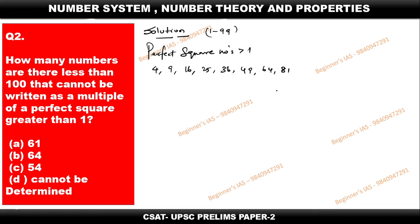The next step is to identify the multiples of these perfect square numbers. After finding all those multiples, we subtract from 99 to get the count of numbers that cannot be written as multiples of a perfect square. Let us now identify the multiples of each perfect square number.